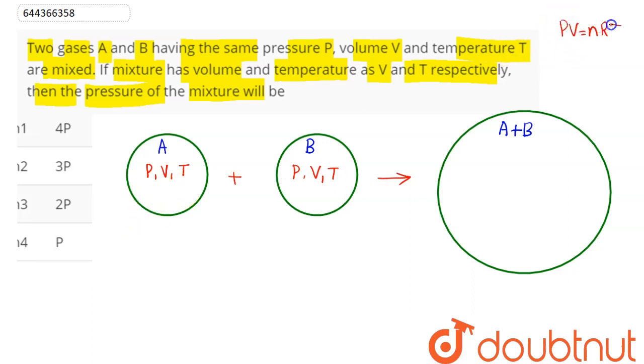Hence number of moles can be written here as n = PV divided by RT. So PV by RT means here this gas A has moles as n, this gas B has also moles as n.